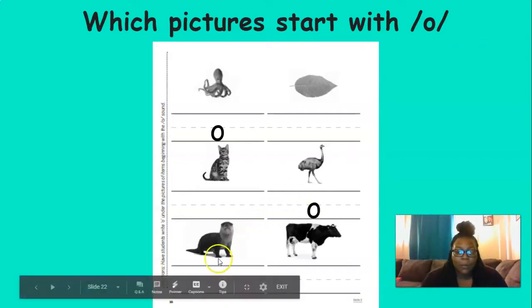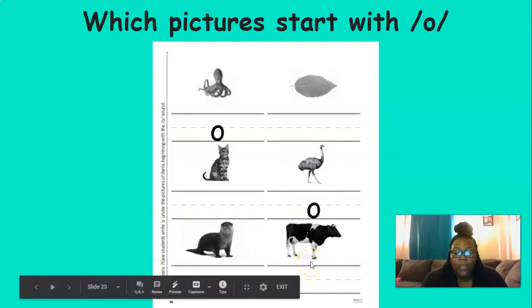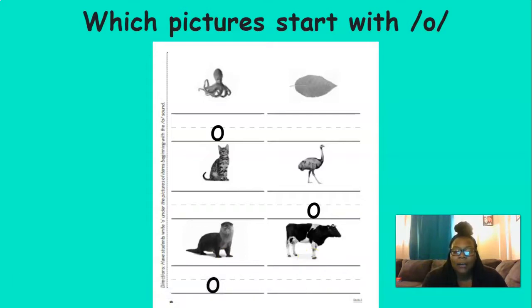Now, the next picture at the bottom is of an otter. Otter. Does an otter start with the ah? You got it. It sure does. Let's put that ah sound. And the last picture is of a cow. Does cow start with the ah sound? No. So, we're not going to put the ah there. Nice job.